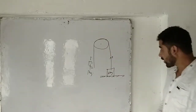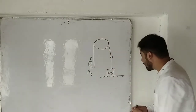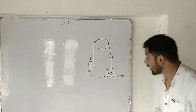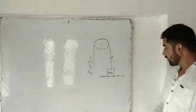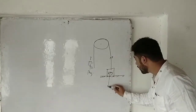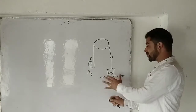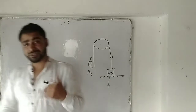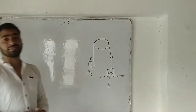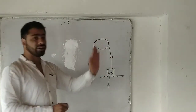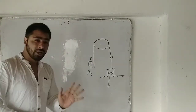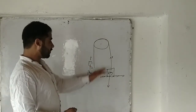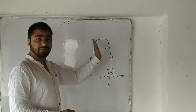Since the block remains in contact with the surface, the tension and the weight of the block cancel out, so there is no acceleration for this block. This helps us calculate the tension in the string. The tension is the same at every point on a massless string because information travels through it at the speed of light.